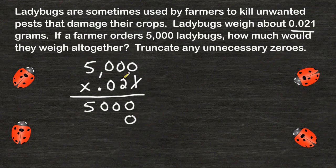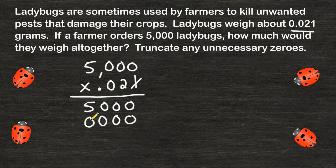Next, we are going to multiply this 2 by these three zeros, so we are just going to write three zeros, and then we're going to multiply 2 times 5, which is 10.